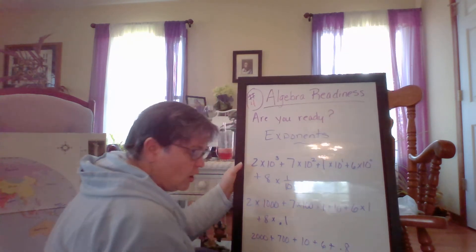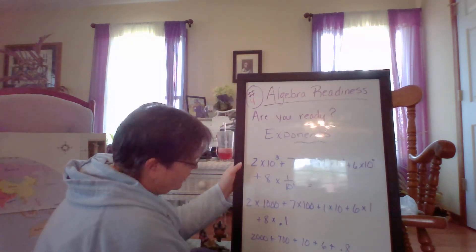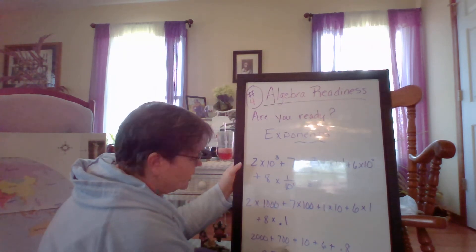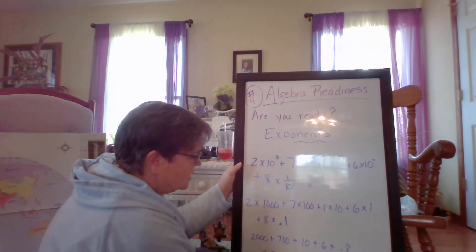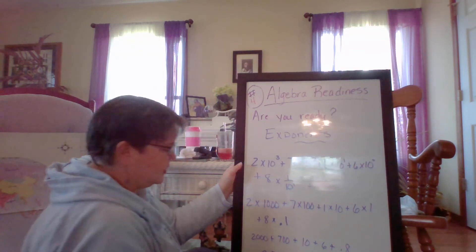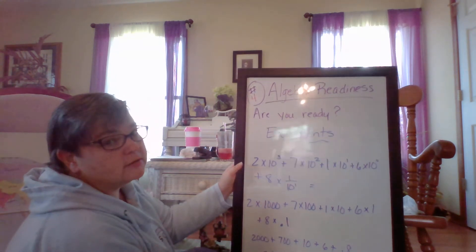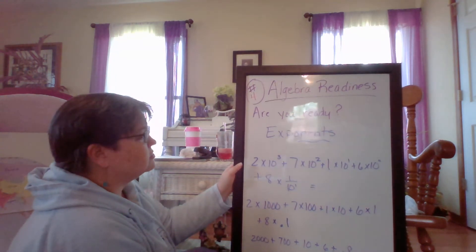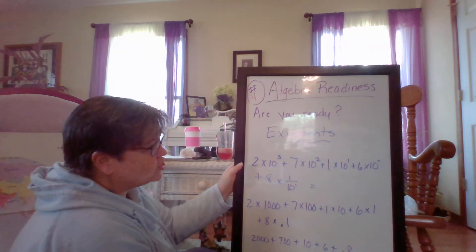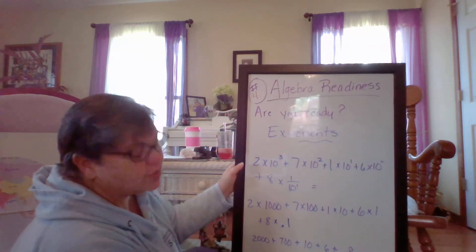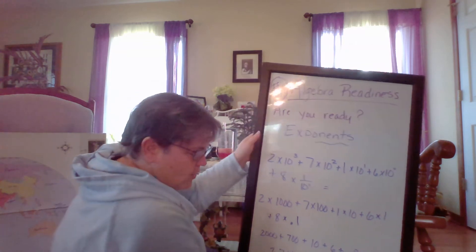And when I add all those together, I get two thousand seven hundred ten plus sixteen point eight. That's my answer. That is scientific notation, otherwise known as standard notation. But you'll see that a lot in science, so get used to it. All righty.